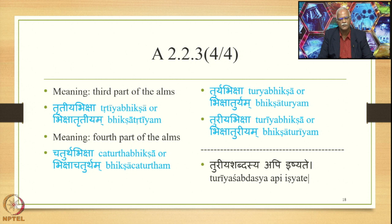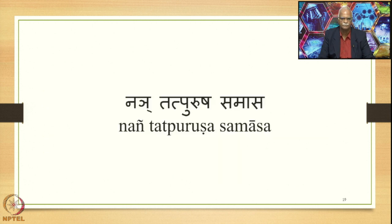The point to be noted is that the first two Sutras stating the Ekadeshi Samasa — namely Purvaparadharo Ttaram Ekadeshina Ekadhikarane and Ardham Napumsakam — are stated primarily to ensure the Purvanipata of the words Purva, Apara, etc. and Ardha. If Shasthi Samasa happened instead, these words would occupy the Uttarapada position. Now let us study the Nay Tatpurusha Samasa, a very important variety of Tatpurusha Samasa.